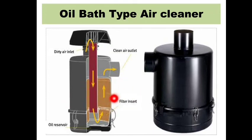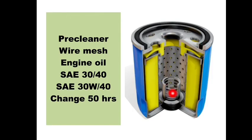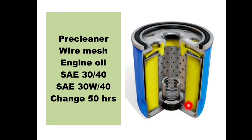The oil bath type air cleaner has wire mesh inside, and an oil reservoir (oil bath) at the bottom. In cross-section, air enters from the inlet walls, gets filtered through the wire mesh, and then passes through the oil bath. Fine particles settle down in the oil bath, and the remaining clean air goes out to the engine. Engine oil is used in the oil bath.